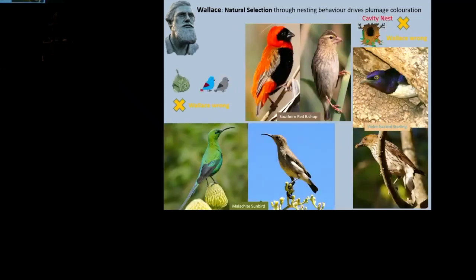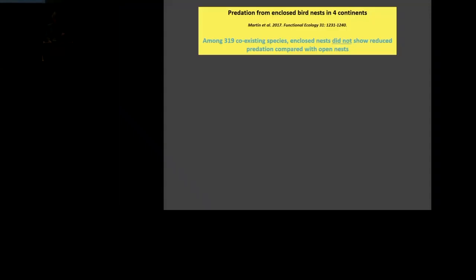But if you look further, there are an awful lot of exceptions. So the violet-backed starling is a hole-nester, the female is cryptic. All of the sunbirds, all of the bishops, the females are cryptic. So there are quite a lot of holes in Wallace's argument if you look in Africa, but I think this is probably the real killer. Two years ago, there was a big study of the relative predation rates, and it showed that enclosed nests did not reduce predation.